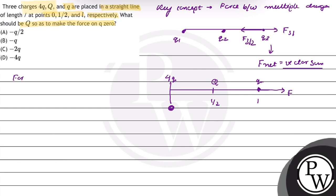Force on small q charge due to 4Q charge will be K times q times 4Q upon R square, that is L square.